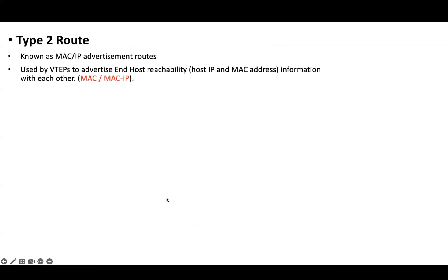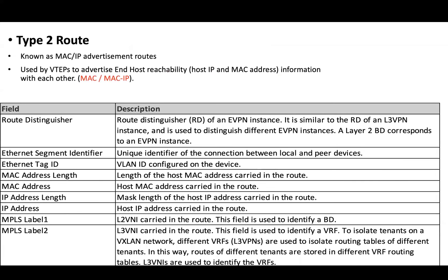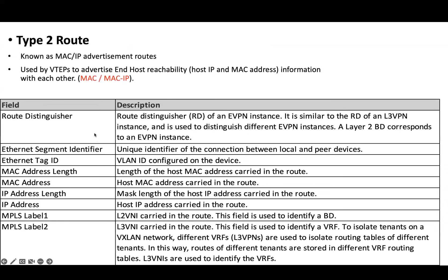In this session we are going to focus on route type 2, 3, and 5. Let's start with route type 2. Type 2 route is also known as MAC advertisement route and is used to advertise MAC address, ARP entry, and routing information of a host. Here is the table that describes the different fields in the type 2 route.